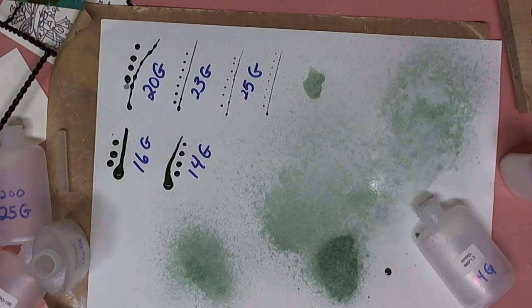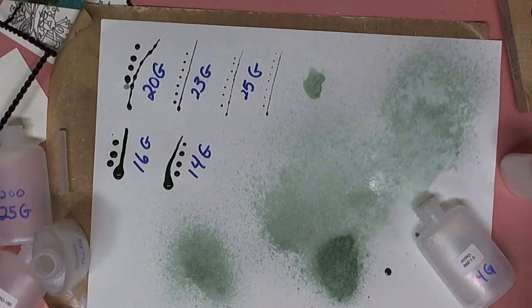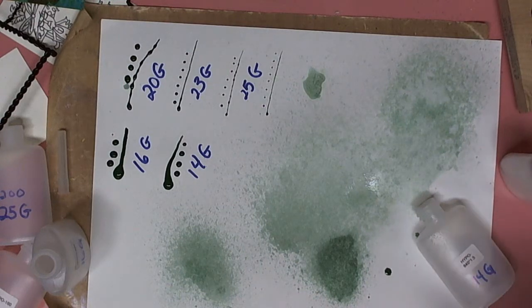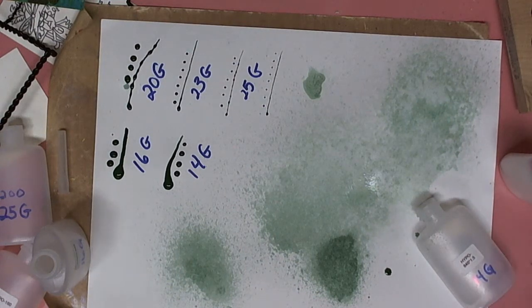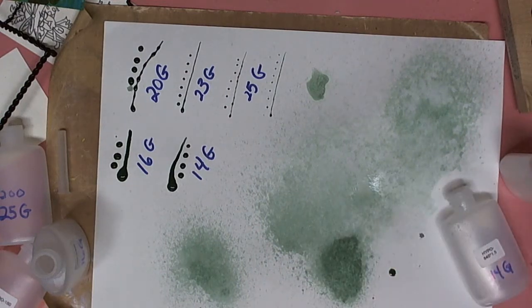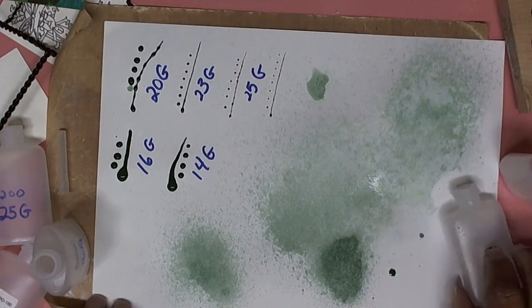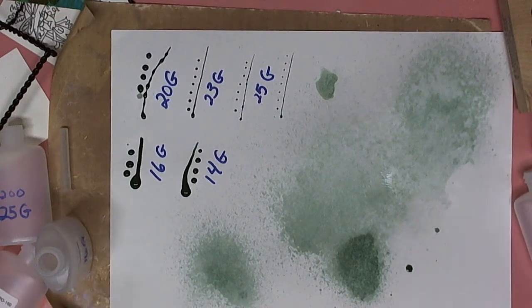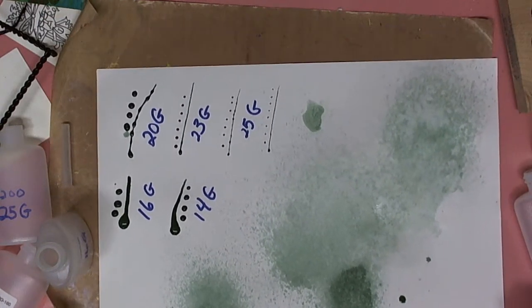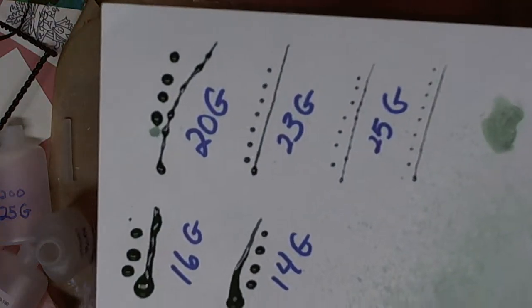What I did was I mixed up some craft paint with some water and ran lines of the sizes that I have, all except one. I didn't run a line of the 18 gauge.